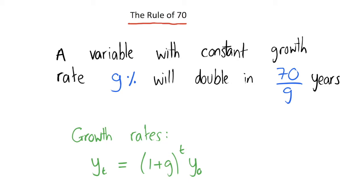So the rule of 70 says that a variable with a constant growth rate of g% (note that we're talking about percentages here) will double in 70 over g years. This constant growth rate g% is obviously an annual growth rate.